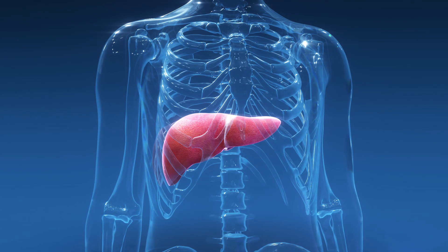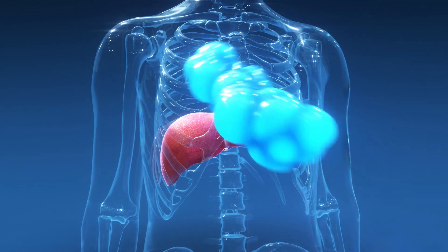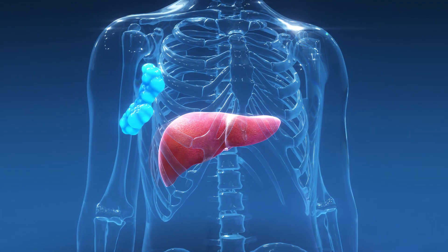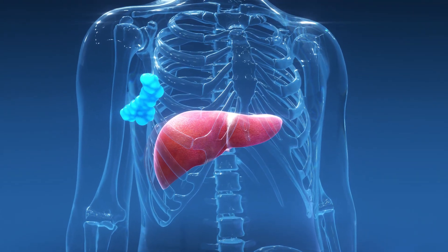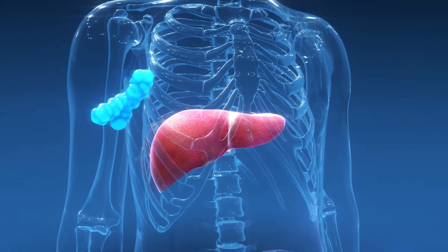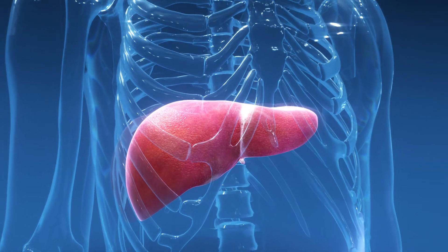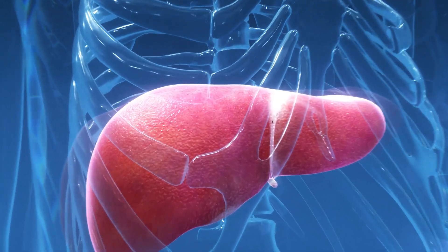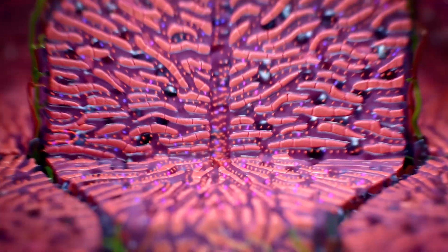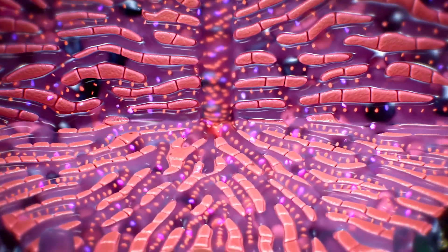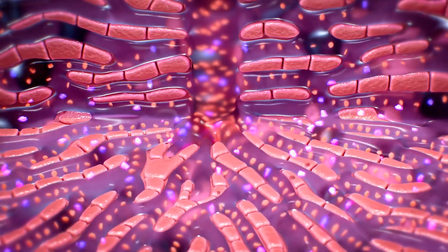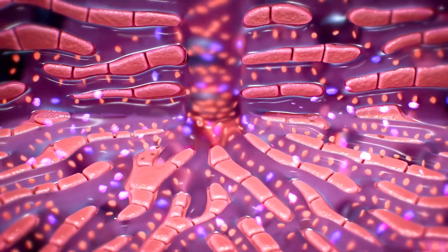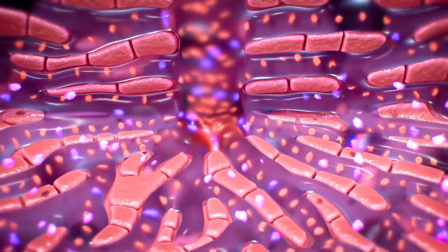In order to understand the mechanism of action of DopTelit, let's first understand what TPO is and its role in platelet production. TPO is a glycoprotein hormone produced in the liver.